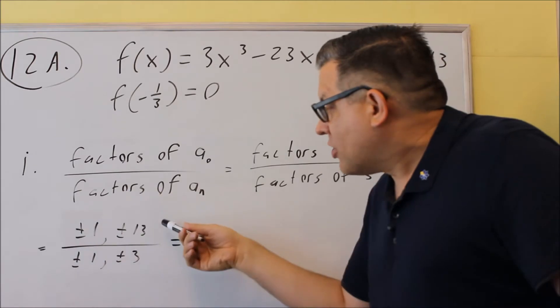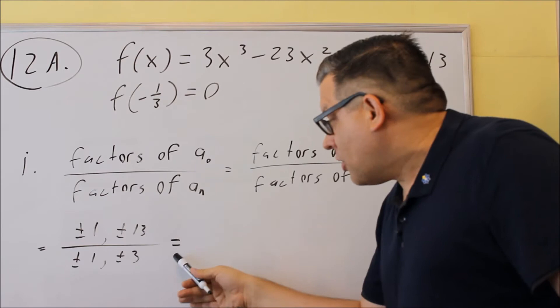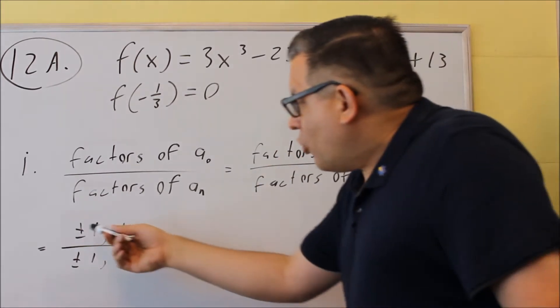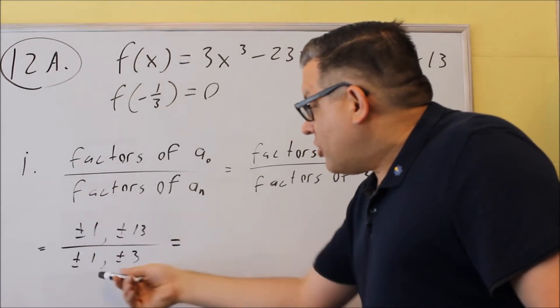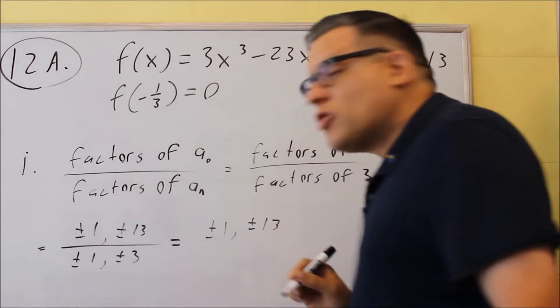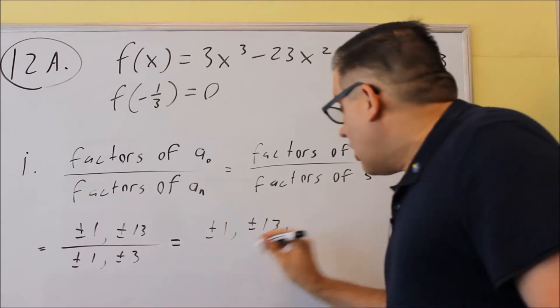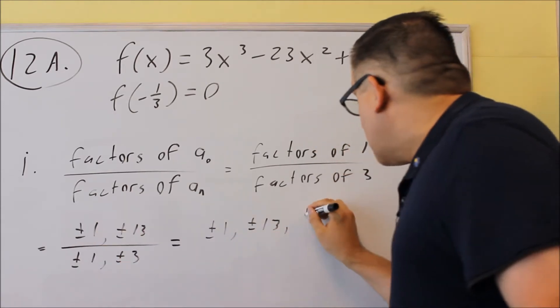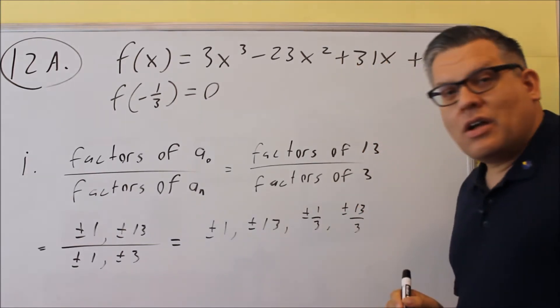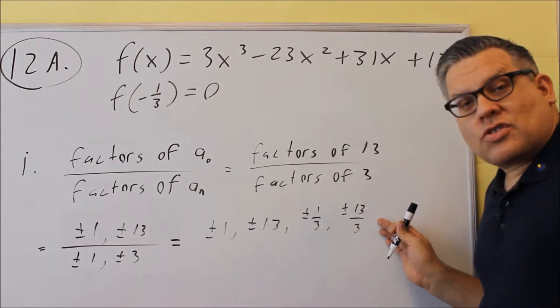What you're going to do is you'll take all the numbers on top, divide by the first number, all numbers on top, divide by the second number, all of them on top, divide by the third number, however many there are. You're going to do that to create your list. Now for this one, we're just going to do 1 and 13 divided by 1. So if we do that, you're just going to get the same two numbers we started with, anything divided by 1 is itself. But now we're going to take all the numbers on top and divide by 3, so we're going to have plus or minus 1 third, plus or minus 13 thirds. And these don't have to be written in any special order.